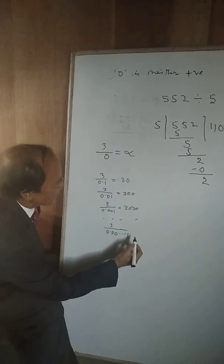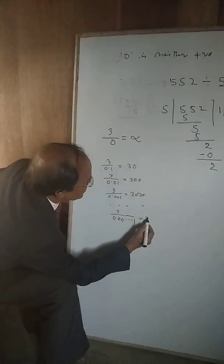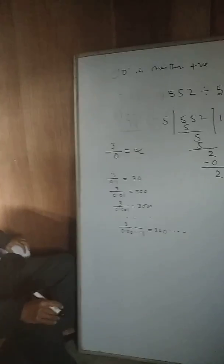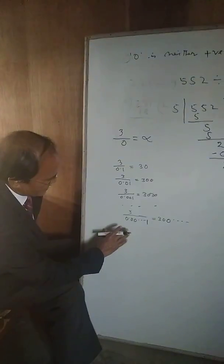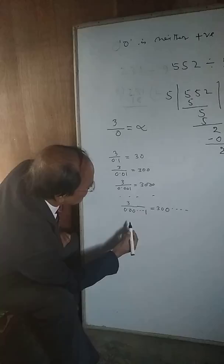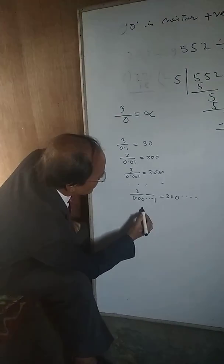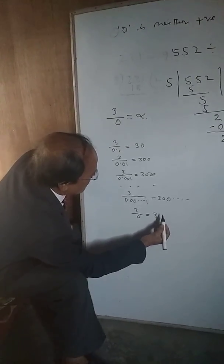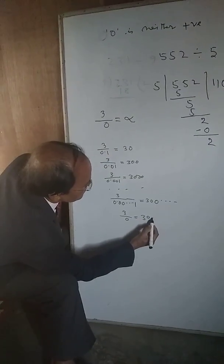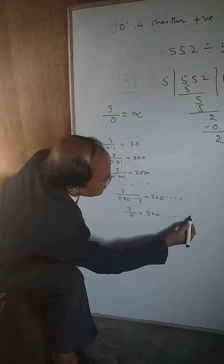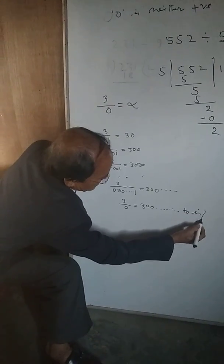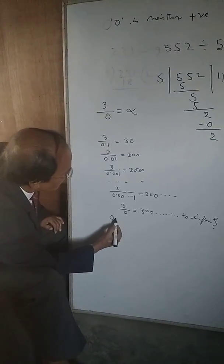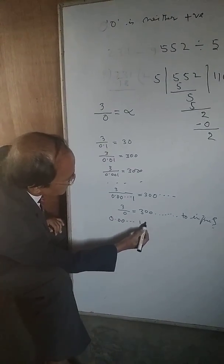This is equal to 3 with more zeros, like this. It means that 3 divided by zero equals infinity. This is infinity.